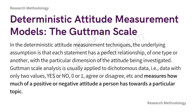The first attitude measurement scale is the Guttman scale. This is a deterministic technique where the underlying assumption is that each statement has a perfect relationship with the particular dimension of the attitude being investigated. It is mostly applied to dichotomous data — either yes or no, one or zero, agree or disagree — with no in-between answer. It is a single ordinal scale also called cumulative scaling or scalogram analysis. It measures how much positive or negative attitude a person has towards a topic. For example: Do you like paneer? Yes or no. Do you like mutton? Yes or no.